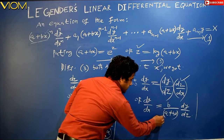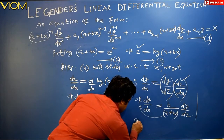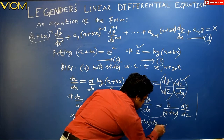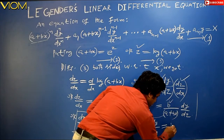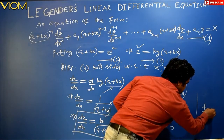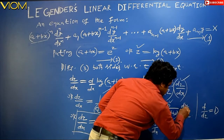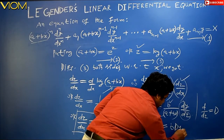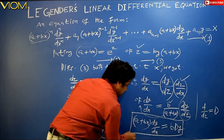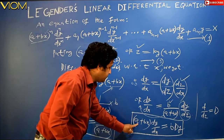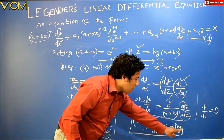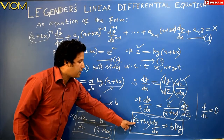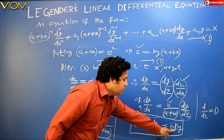Multiplying both sides by (a + bx): (a + bx) · (dy/dx) = b · (dy/dz). Using the operator D = d/dz, this becomes (a + bx) · (dy/dx) = b · Dy. This is the most important first formula: whenever you see (a + bx)(dy/dx) in a Legendre's equation, you can replace it with b·Dy.